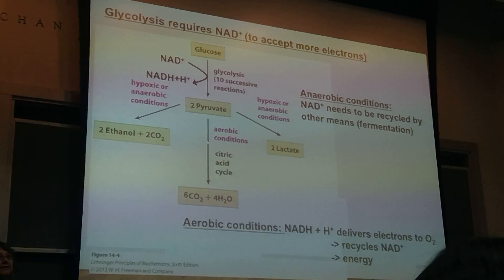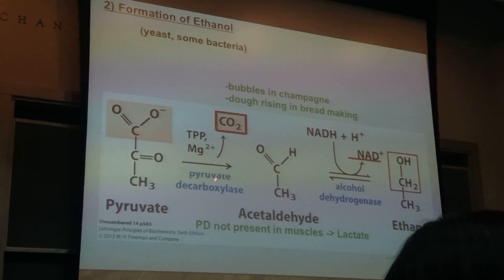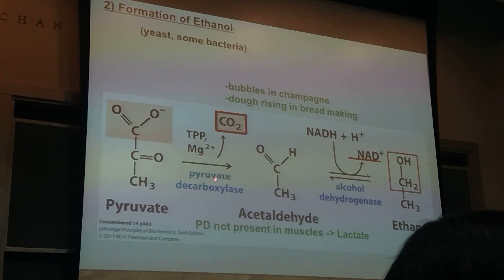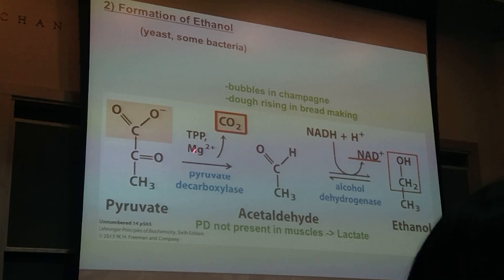Right now, we're going to talk about how that happens, so you'll get more details. For the formation of ethanol, this can be done by yeast, as we know, and some bacteria. The major reaction is that we have pyruvate going with pyruvate decarboxylase. This is irreversible. It uses a cofactor called thiamine pyrophosphate, and basically you're cleaving off the CO2 group to make acetaldehyde. Acetaldehyde is actually toxic in the cell, so you don't want it to accumulate.